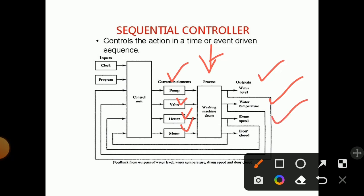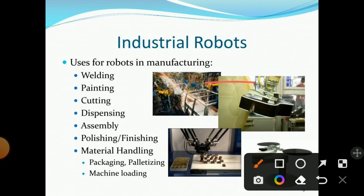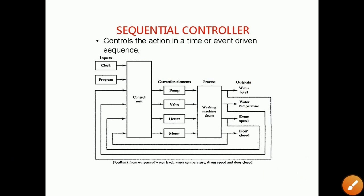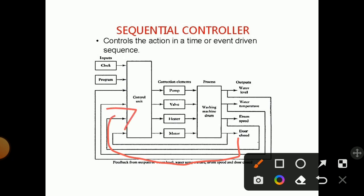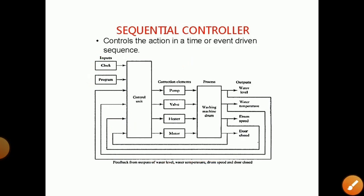The outputs of the washing machine process — water level, water temperature, drum speed, and door status — are taken as feedback and given to the control unit. The control unit makes corrections to the correcting elements: the pump, heater, and valves are either opened or closed based on the feedback. The control unit requires a clock and a program for its working, and controls actions in a time-driven or event-driven sequence.